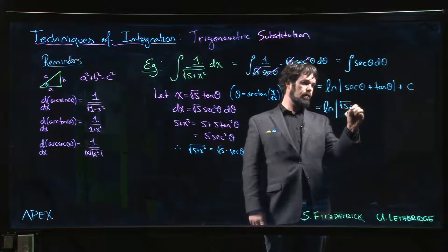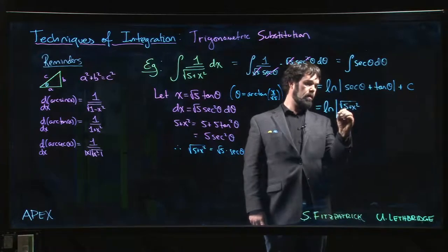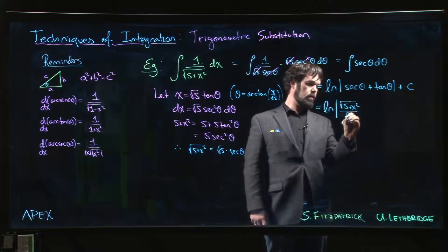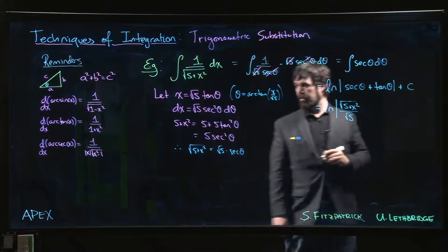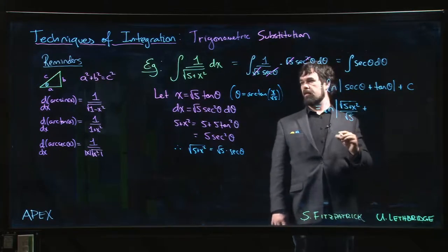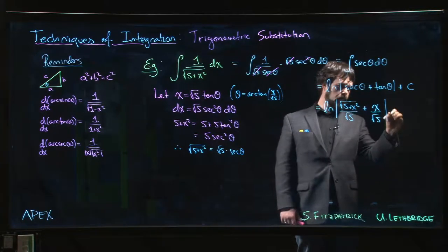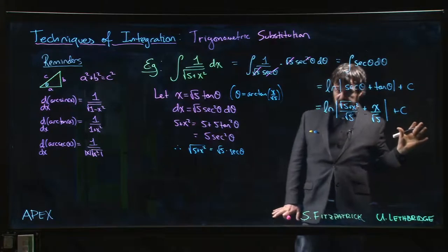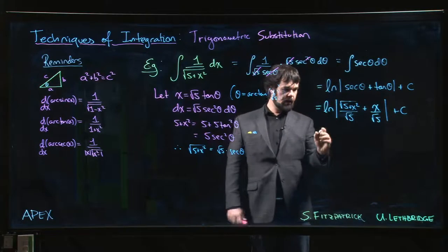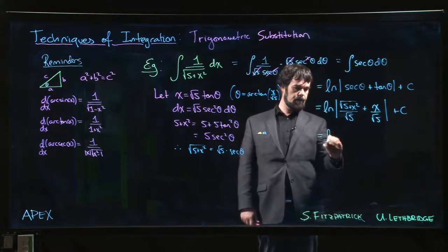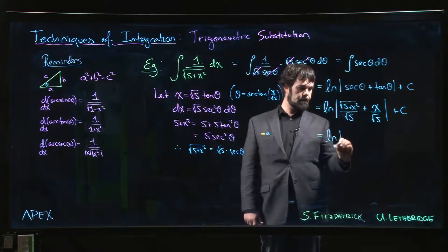Plus c. So that's root 5 plus x squared plus x, all over root 5, plus c. You can leave it at that. If you want to clean this up a little bit, we could do this.